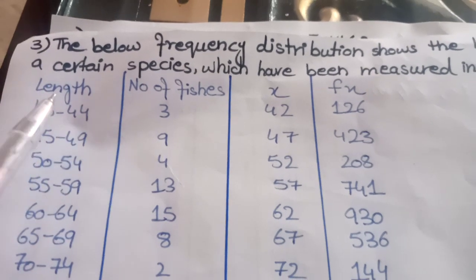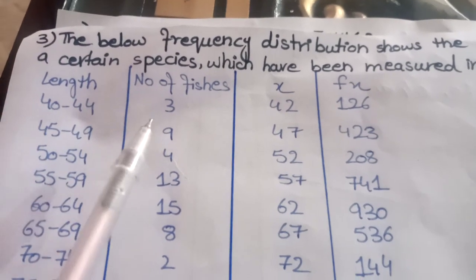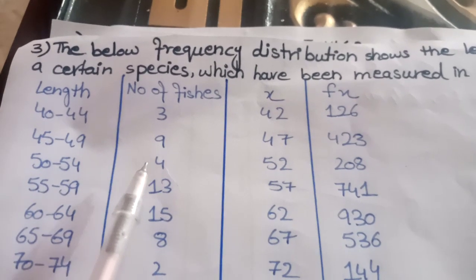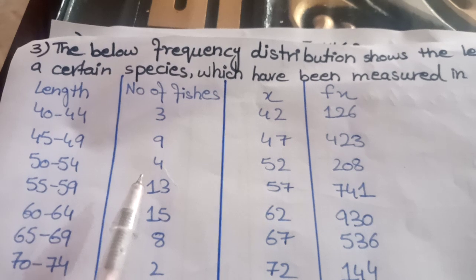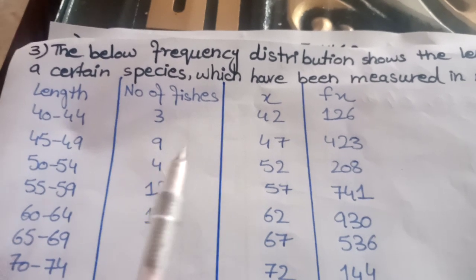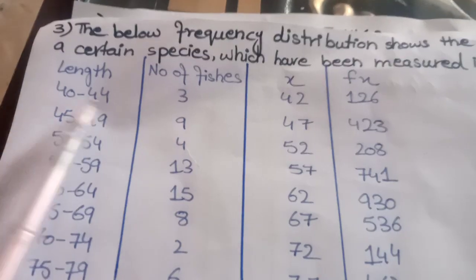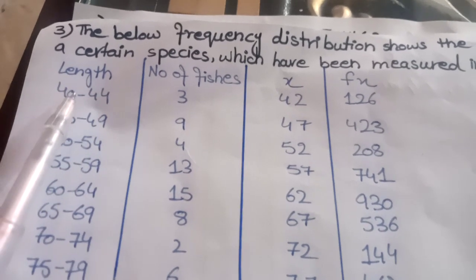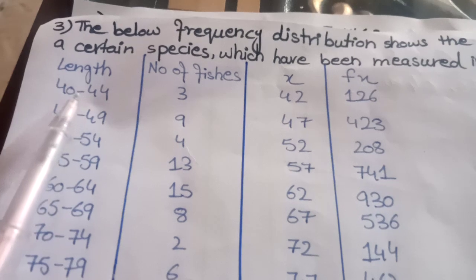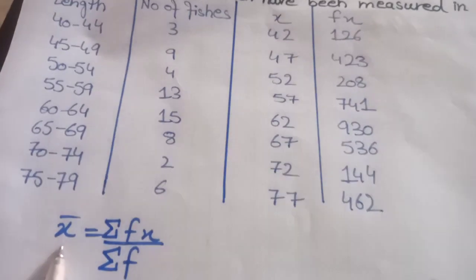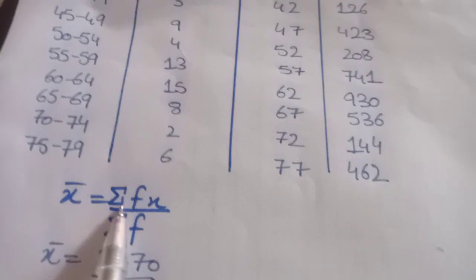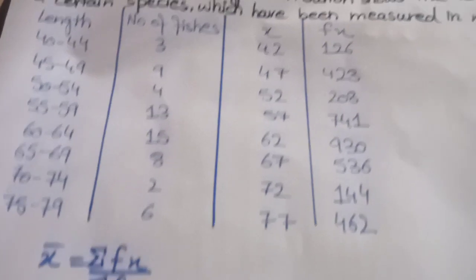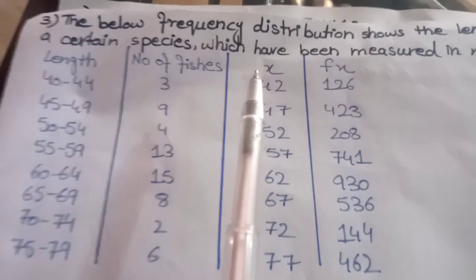The third question has length and number of fishes given — this is also grouped data. From this grouped data we also need to find arithmetic mean. Here class intervals are given, so the formula remains the same: arithmetic mean equals summation fx divided by summation f.